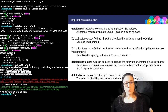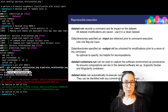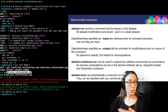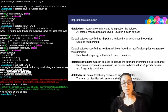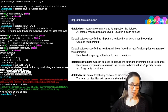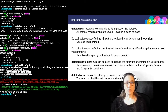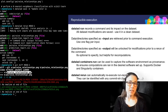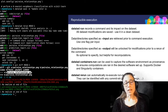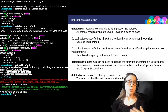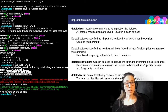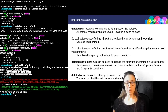To quickly summarize the reproducible computation features: the datalad run command can record a command and its impact on a dataset. Whatever the command produces will be saved, so you should use it in a clean dataset. Everything that you specify as input will be retrieved prior to the command execution. And everything specified as output will be unlocked for modification if the command is rerun. If you want to capture computational environments as provenance, you can use the datalad containers extension to add software images to your dataset and run commands inside of them. And if you want to redo a computation, you can use datalad rerun to automatically re-execute commands based on the provenance you have collected.